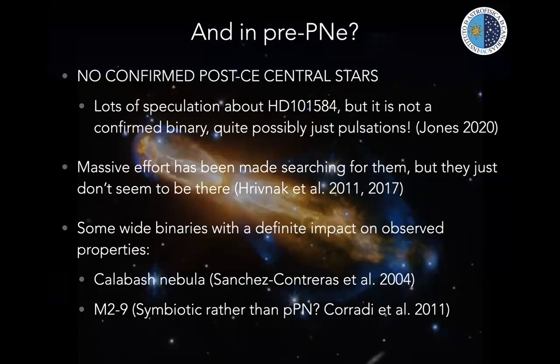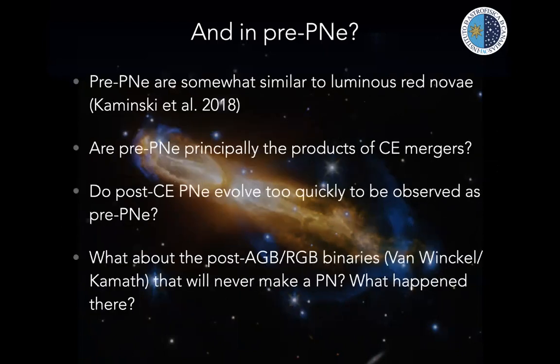Regarding pre-planetary nebulae: we expect these to evolve into planetary nebulae, and yet while at least 20% of post-common envelope central stars are found in planetary nebulae, there are no confirmed post-common envelope central stars in pre-planetary nebulae. People have seriously searched — Bruce Kribnack has spent considerable time looking — and found only a handful of wide binaries but no post-common envelope systems. Tommy Kaminsky has shown that properties of pre-planetary nebulae resemble luminous red novae, which are merger products — could pre-planetary nebulae actually be mergers from common envelopes rather than surviving binaries?